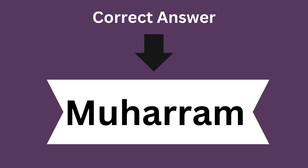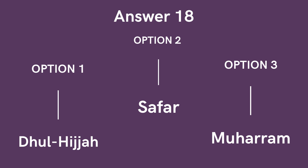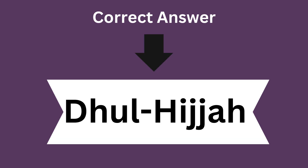Question 18: What is the last month of the Islamic calendar? Option 1: Dhul Hijja. Option 2: Dhul Qa'da. Option 3: Muharram. And the correct answer is Dhul Hijja.